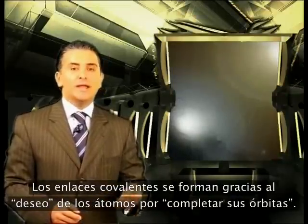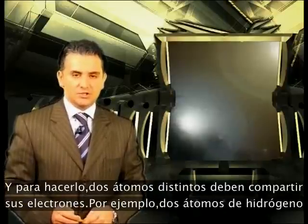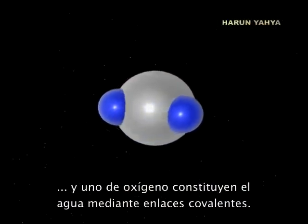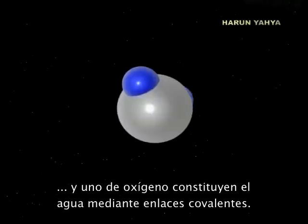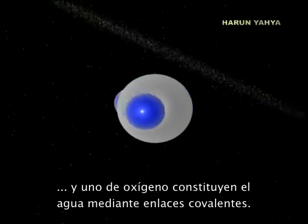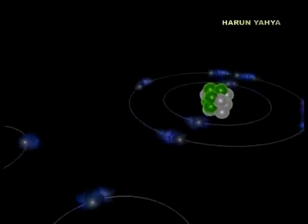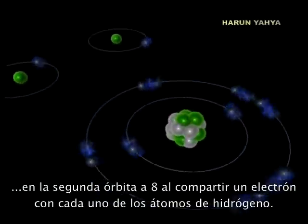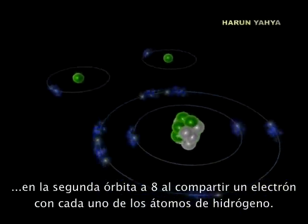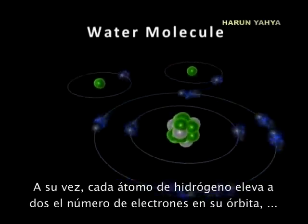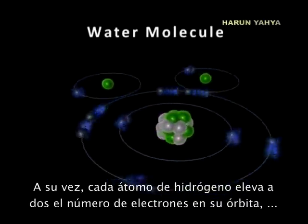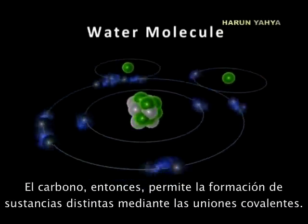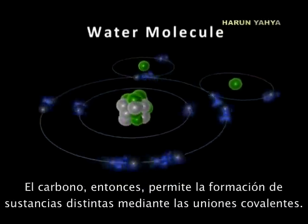Two different atoms that want to complete their orbits do so by sharing their electrons. The two hydrogen atoms and one oxygen atom that constitute water, for instance, build a covalent bond. The oxygen raises the number of electrons in its second orbit by sharing one electron with each of the hydrogen atoms. Each hydrogen atom raises the number of electrons in its second orbit to two by using one of the oxygen electrons. Carbon thus gives rise to very different substances by building such covalent bonds.